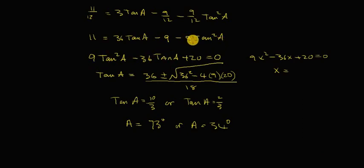I bring my 9 minus 9 tan squared A over to the left hand side. I get 9 tan squared A. Minus 36 tan A. It has to go across as well. Minus 36 tan A. And I have a plus 11. A 9 plus 9 gives me plus 20 is equal to 0.